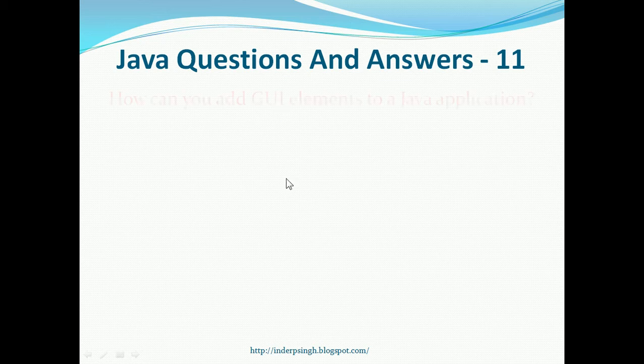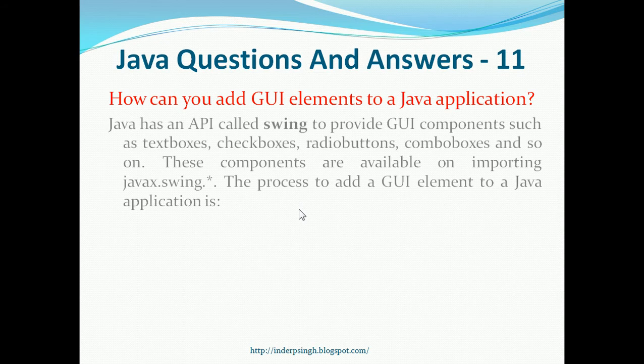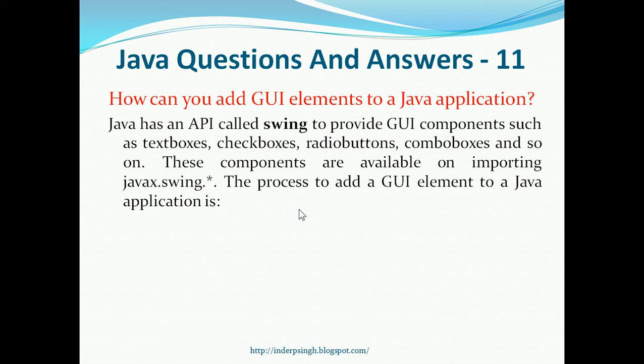Question 11. How can you add GUI elements to a Java application? Java has an API called Swing to provide GUI components such as text boxes, check boxes, radio buttons, combo boxes and so on. These components are available on importing javax.swing.*